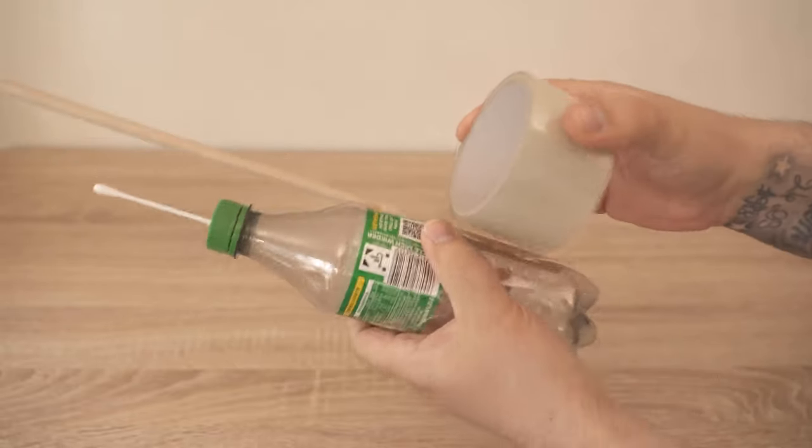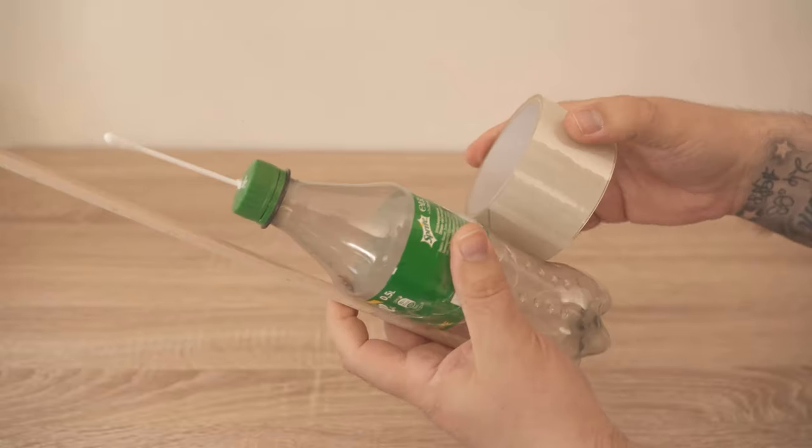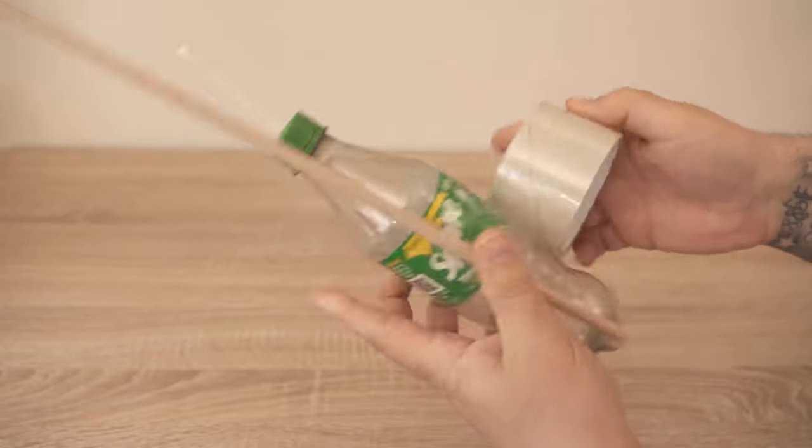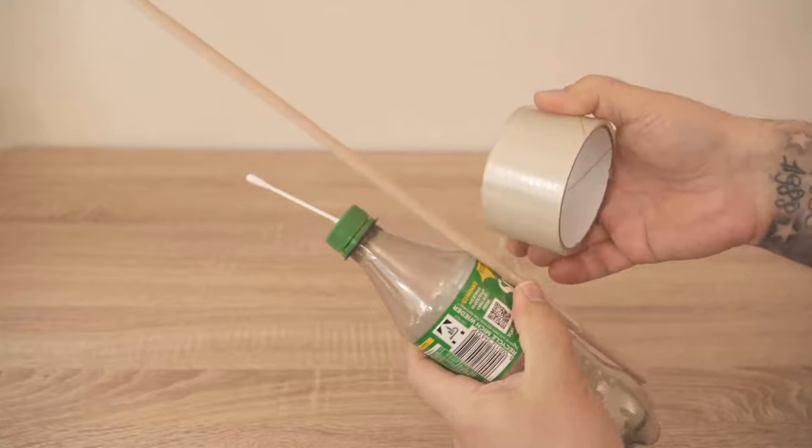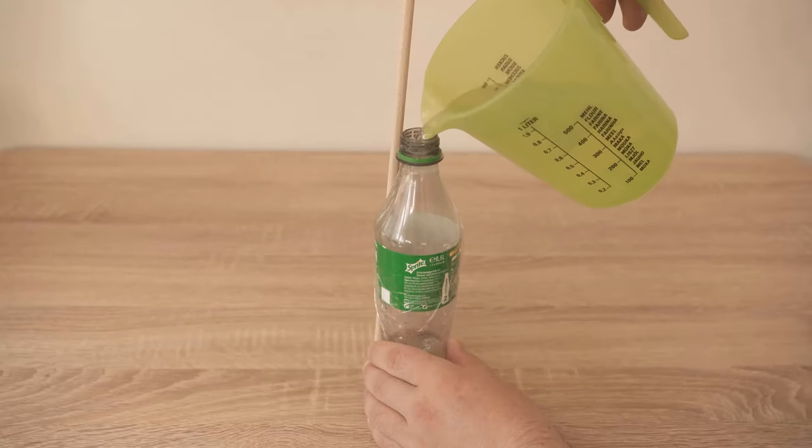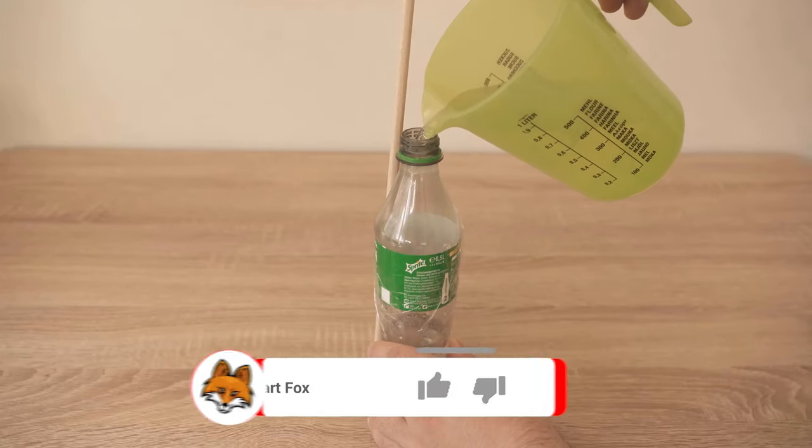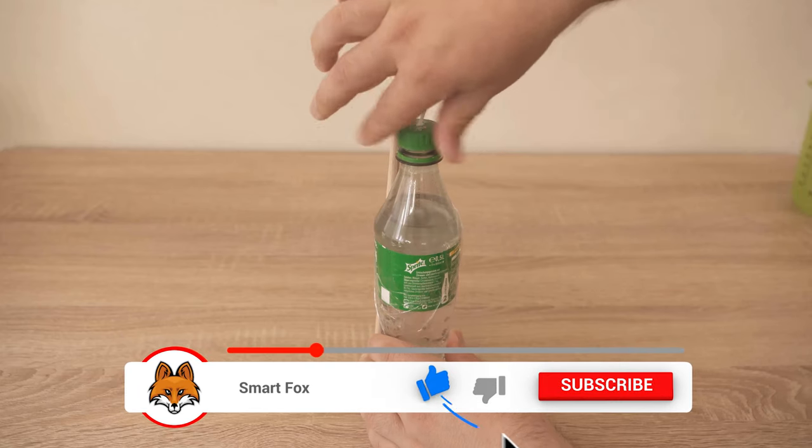In the next step, of course, you need to unscrew the lid here and then put water into the bottle. Now screw the lid back on and our automatic watering system is ready.